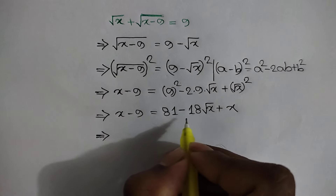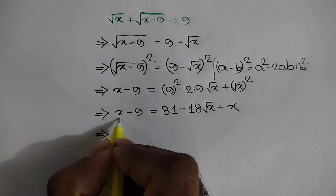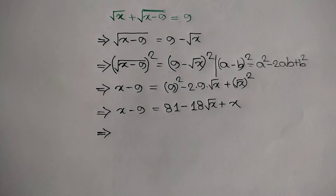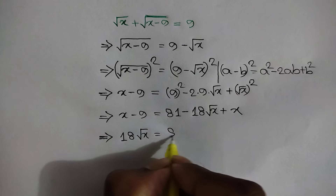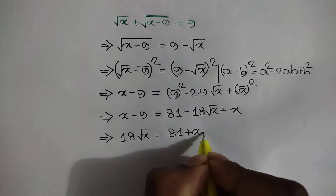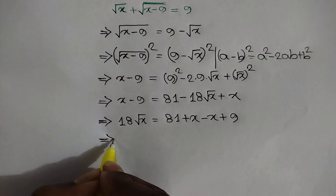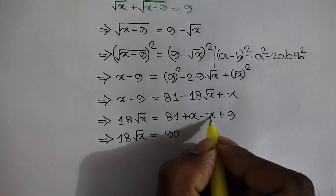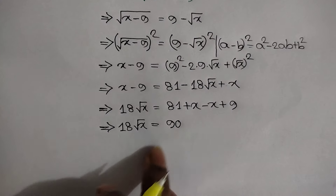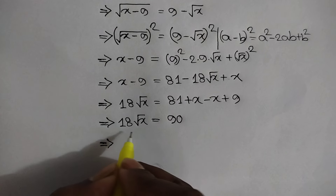Now moving negative 18 root x to the left side and x minus 9 to the right side, we will write 18 root x is equal to 81 plus x minus x plus 9. So 18 root x is equal to 81 plus 9, and this x and this x cancel out, so it remains 90.